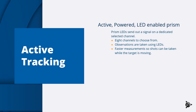Active tracking mode needs an active prism, which is a powered prism with LEDs in it. The prism LEDs send out a signal on a dedicated selected channel — there are eight channels available to choose from. Observations are taken using the LEDs, which means faster measurements and shots can be taken while the target is moving.